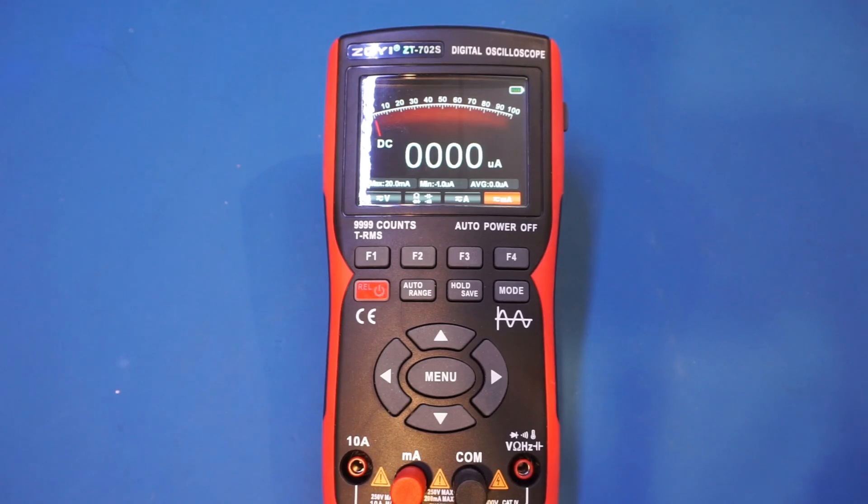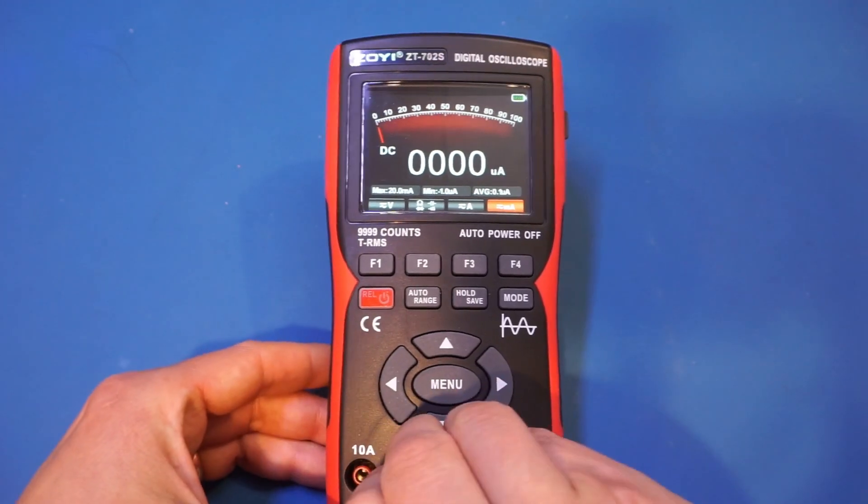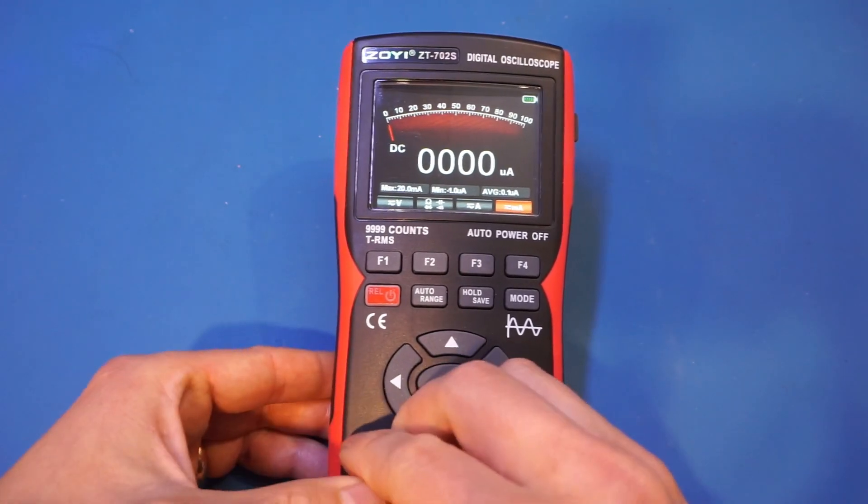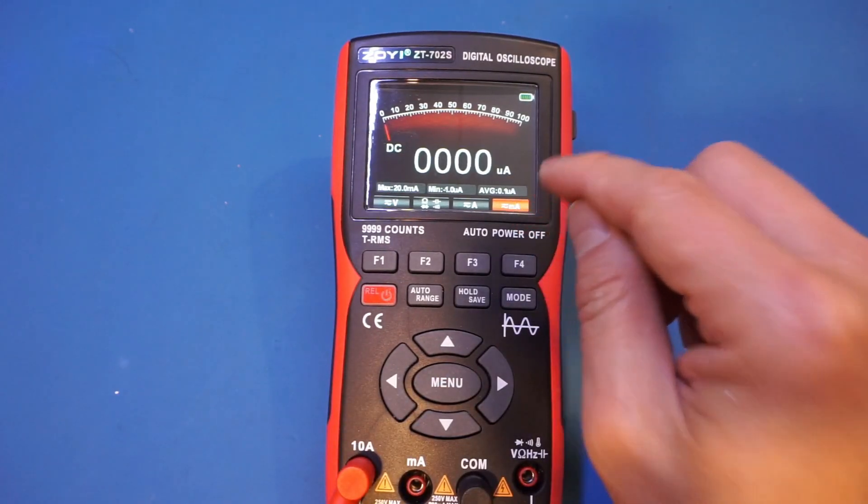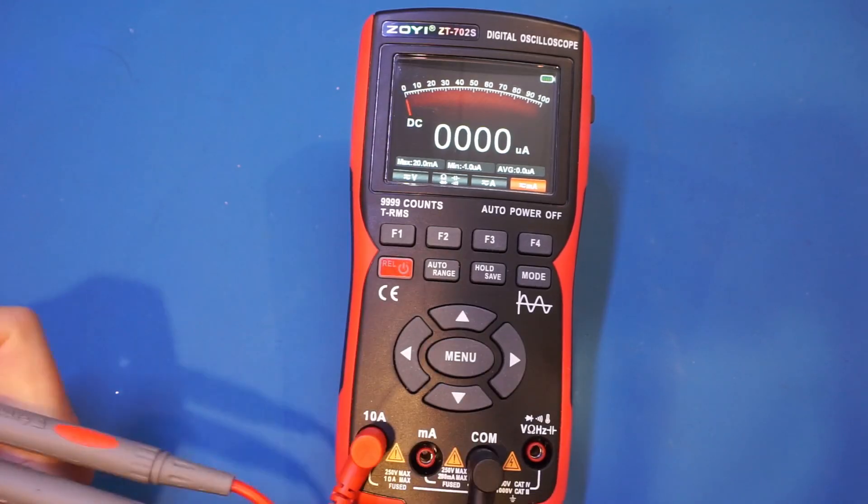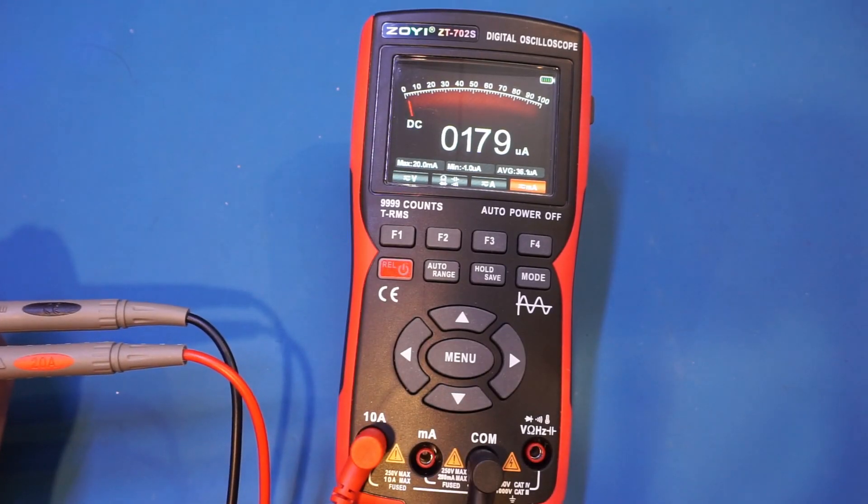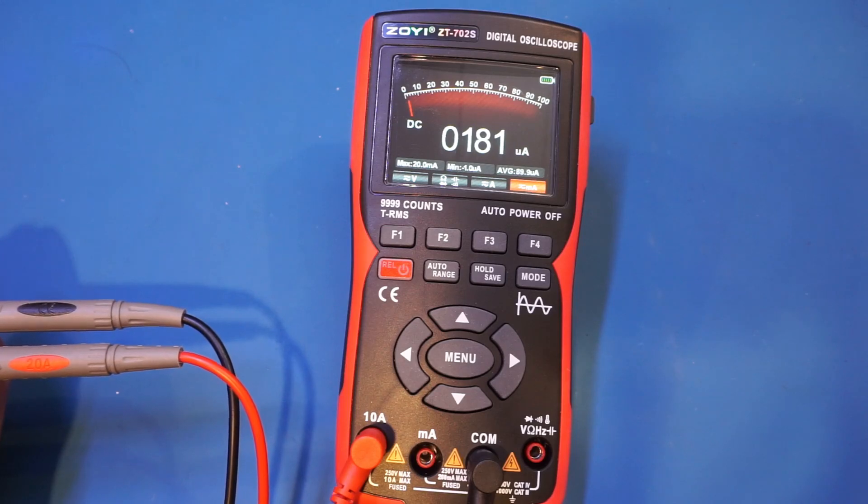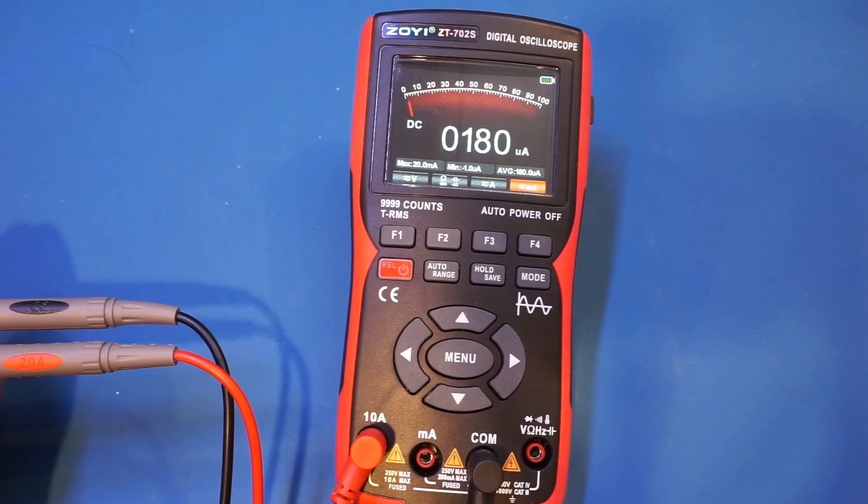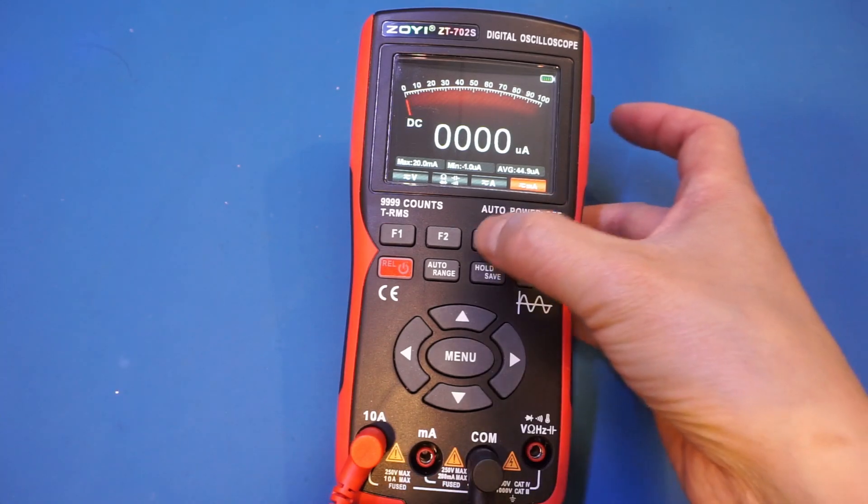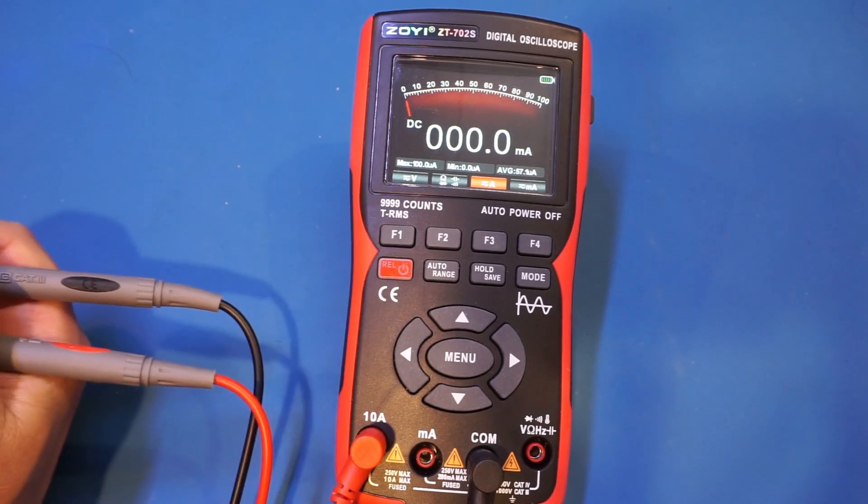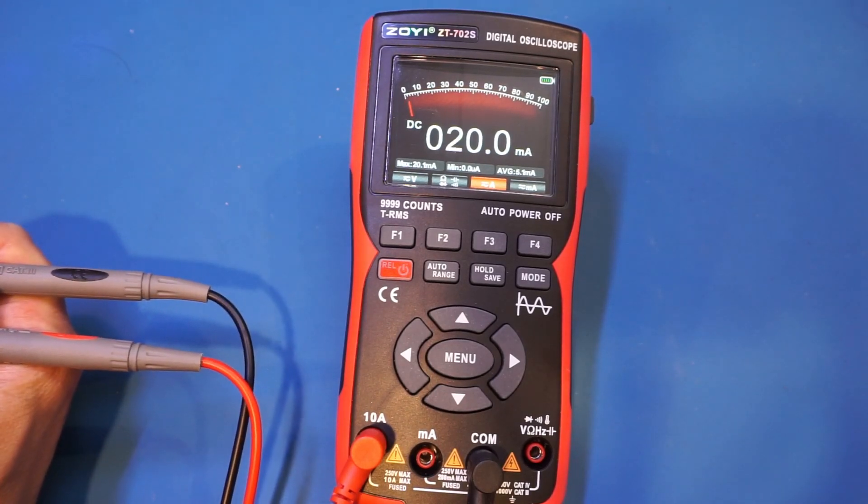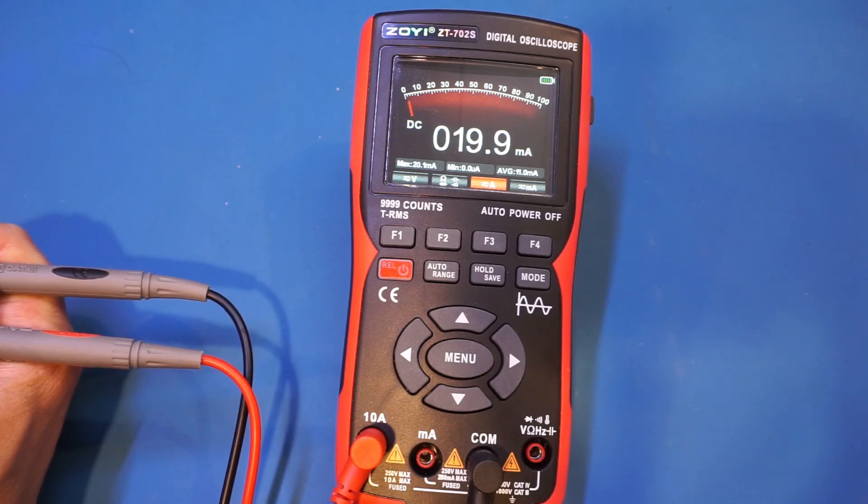the incorrect reading happens the other way around as well. So let me switch to the 10 amp input jack and leave the current range to milliamp. So let's see what happens here. You can see now we're measuring 179 microamps, which is clearly incorrect, as we're in the wrong current measurement range. Now if we swap to amp range, we will get the correct reading. As you can see, now we're measuring 20 milliamps, no problem at all.